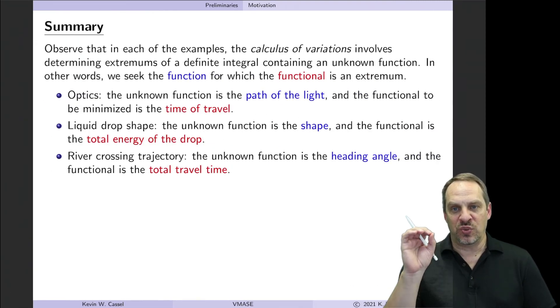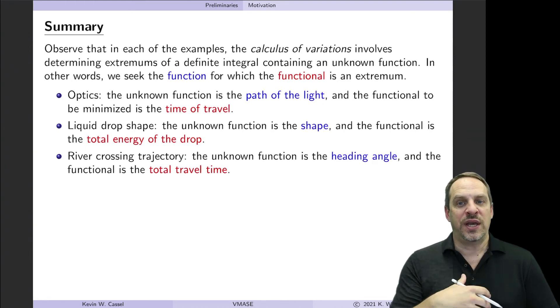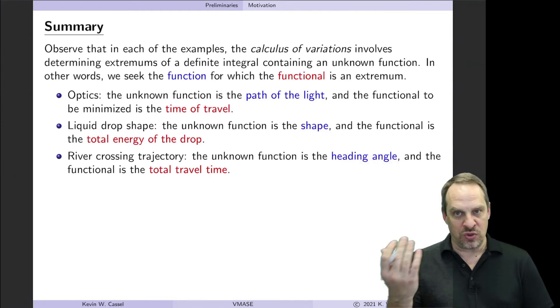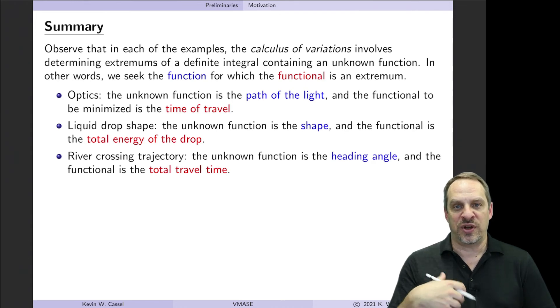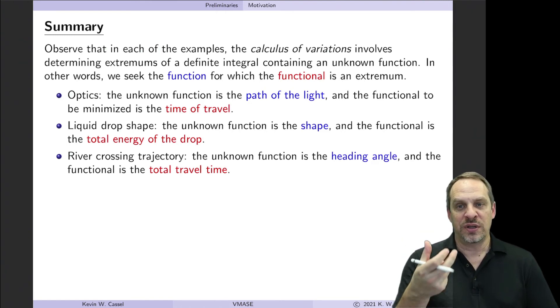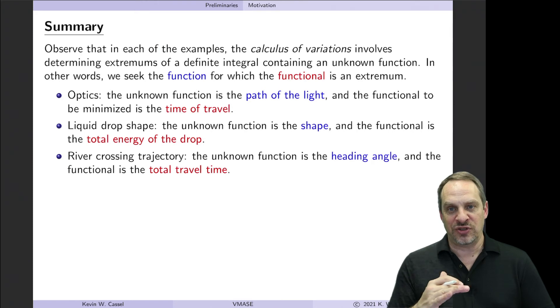So in all three of these cases, we took the word statement of a physical principle or an optimization problem, and we put it into the most natural mathematical form that we could, and in all three cases, it ended up being a functional, a definite integral involving an unknown function, U of X or U of R in this case. And so in every case, we have a function, and we have a functional. The function is the thing that we're looking for, that's the path of the light, the shape of the liquid drop, that's the heading angle, or the path of the boat. And we have a functional. The functional is the thing that we're trying to minimize, or maximize, or otherwise be a stationary function. And that is the total travel time for the light, the total energy of the drop, or the total travel time of the boat. So in every case, there's going to be a dependent variable U of X or R. That's what we're looking for, and we're looking for that function that minimizes, or maximizes, or otherwise makes our functional stationary, as we'll discuss in chapter two.